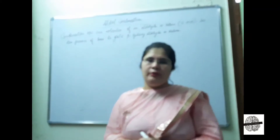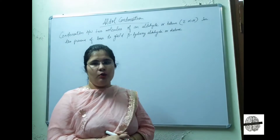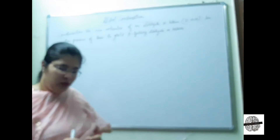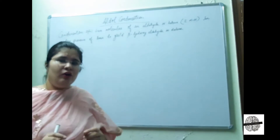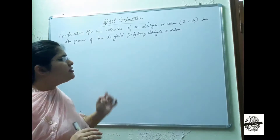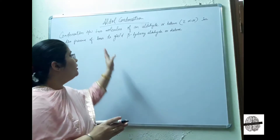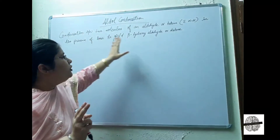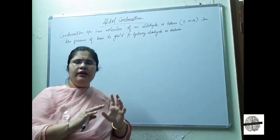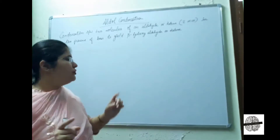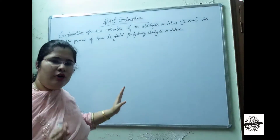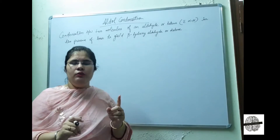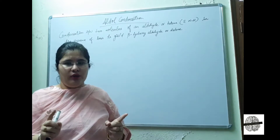Welcome to Chem Bio Classes. Today we will discuss aldol condensation. Aldol is the beta-hydroxy aldehyde or beta-hydroxy ketone, and condensation is the mixing of two molecules. Aldol condensation is the condensation between two molecules of aldehyde or two molecules of ketone, or between an aldehyde and a ketone with alpha hydrogen in the presence of base to yield beta-hydroxy aldehyde or beta-hydroxy ketone.